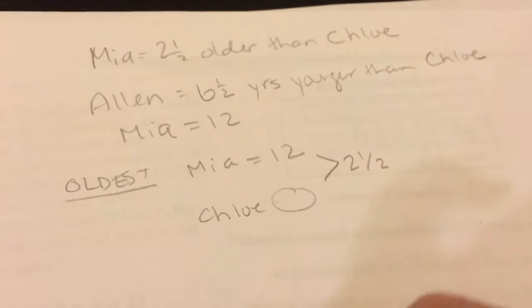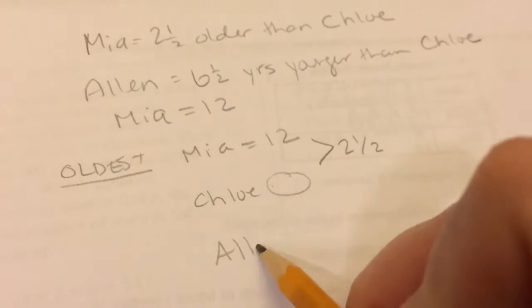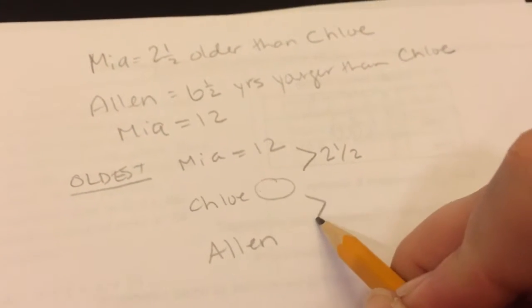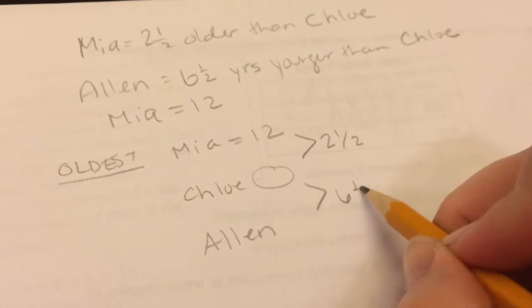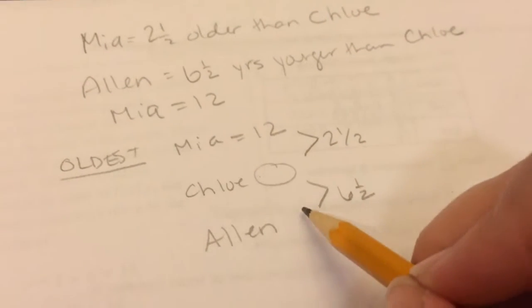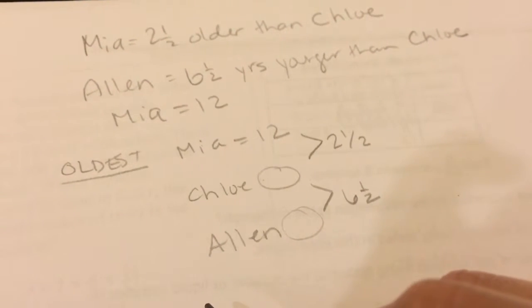So I need to know how old Chloe is. And then Alan is last. And that gap between the two of them is 6½ years. So it wants to know how old is Alan.